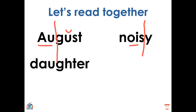This word looks a bit intimidating, but I promise it's not. We have the diphthong AUGH saying AW. Now we can split it into our syllables: DAUGH and TER. Which, if we put them together, give us the word DAUGHTER. Very good.